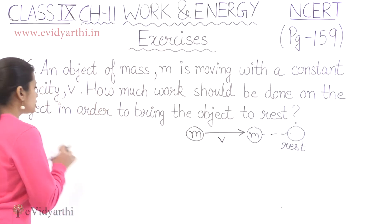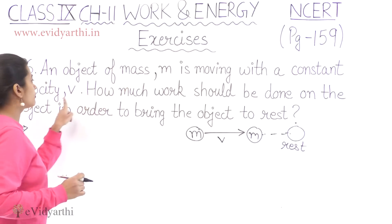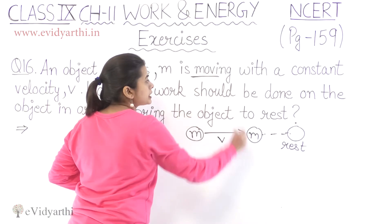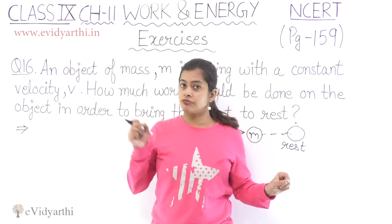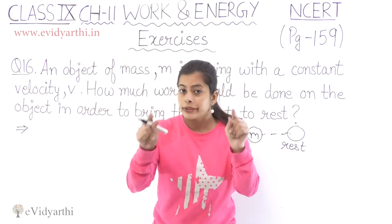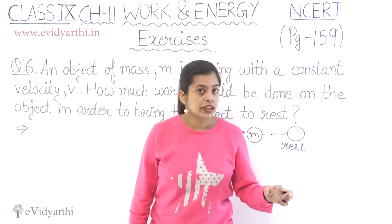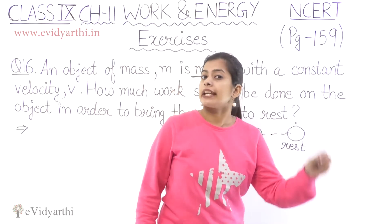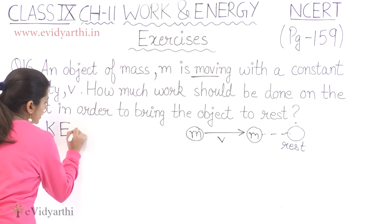So first of all, our givens are mass and velocity. And importantly, we know that our object is moving. So in a moving object with mass and velocity, we should have a little bit of a hint. What is the meaning of a moving object? How much energy is there? It has kinetic energy.